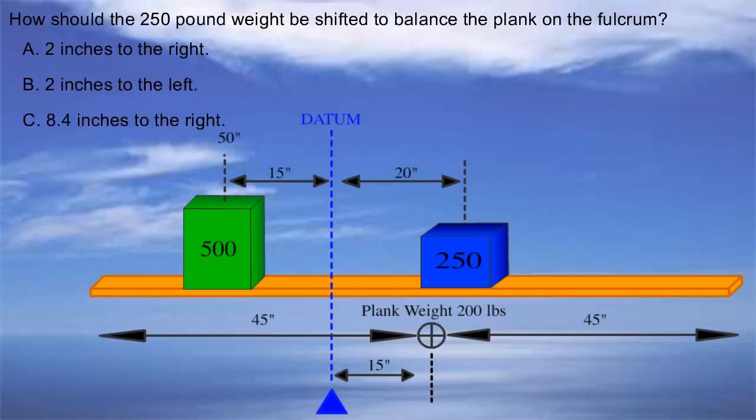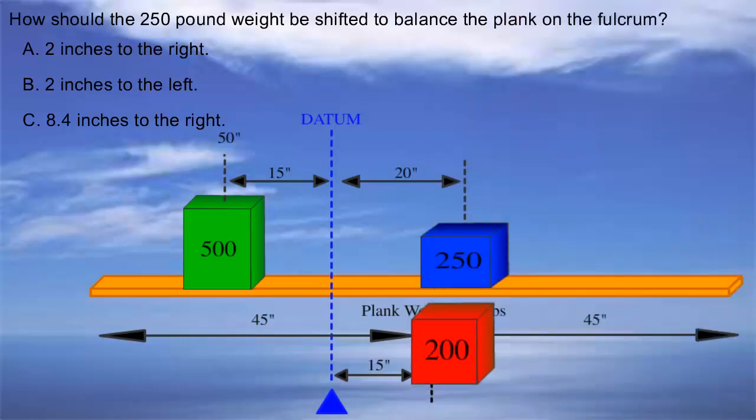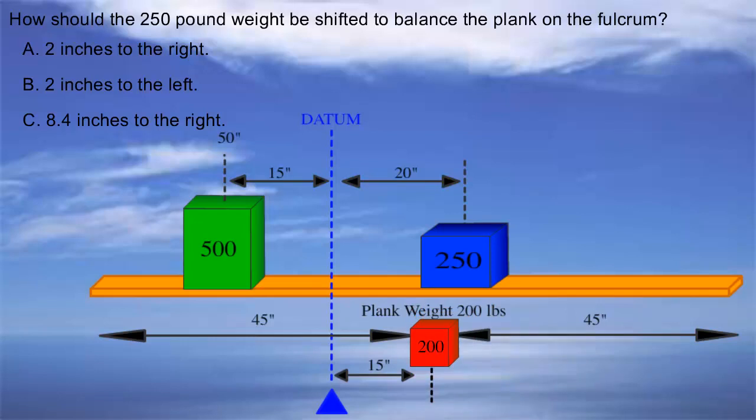First, you need to realize that the plank's center of gravity is not located on the datum line as it was before. So we need to treat the plank itself as an additional weight, and that's why I replaced it with a weight. That being done, like before, we need to make sure that the moment on the left of the fulcrum is the same as the one to the right of the fulcrum.